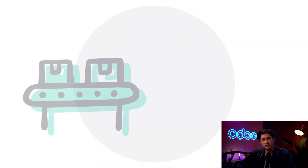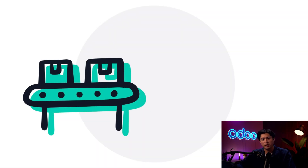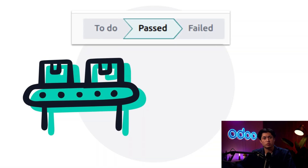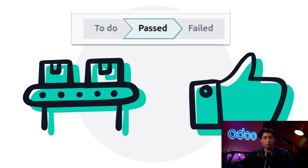What's often missing is a way to embed quality assurance directly into your workflows — from manufacturing and receipts to returns and transfers — ensuring quality checks happen before issues reach the customer.